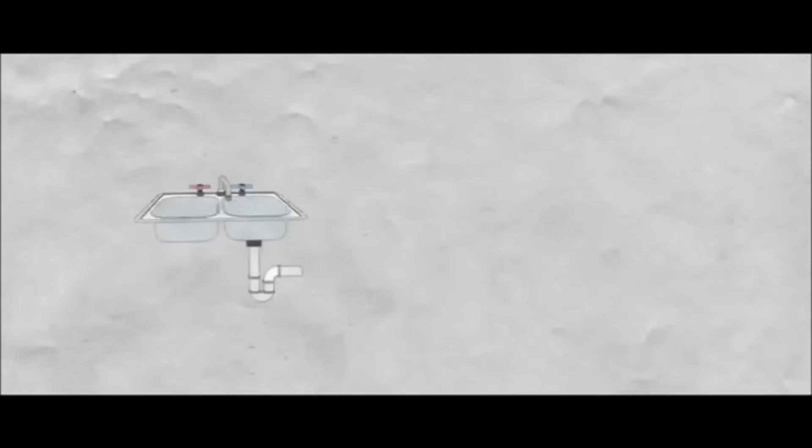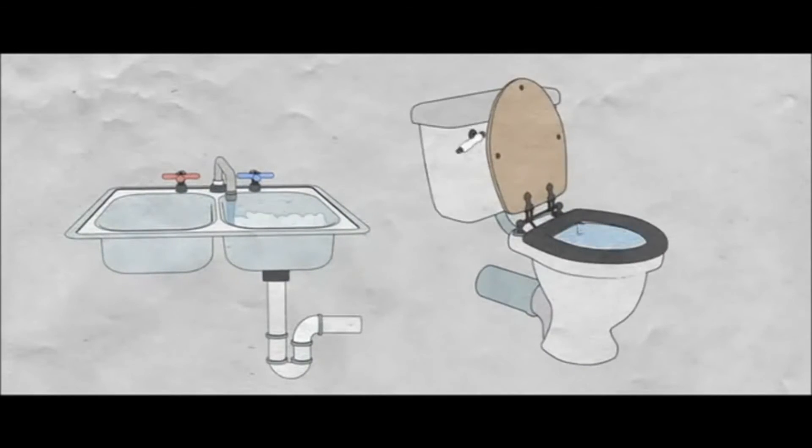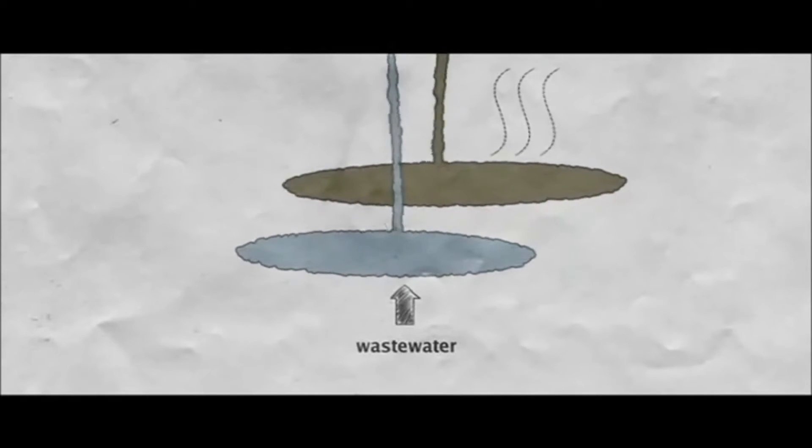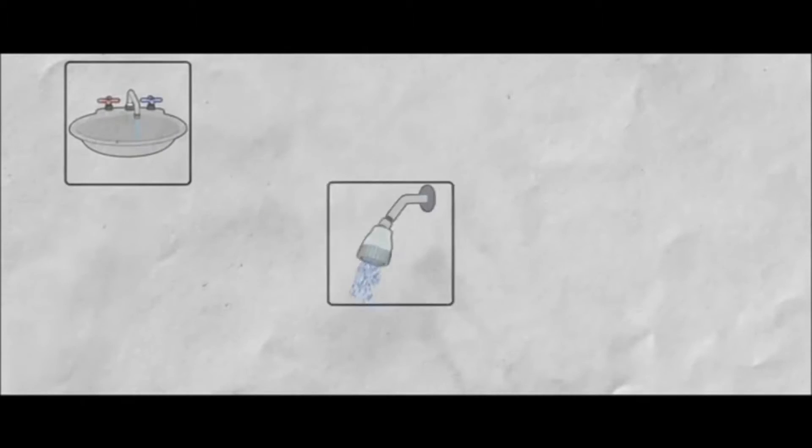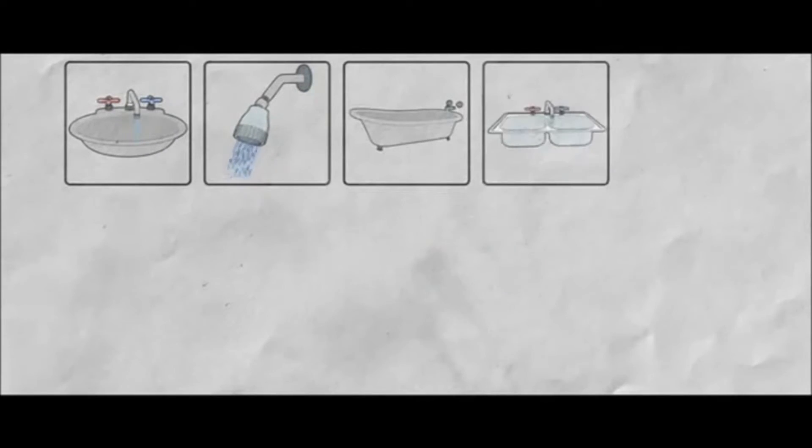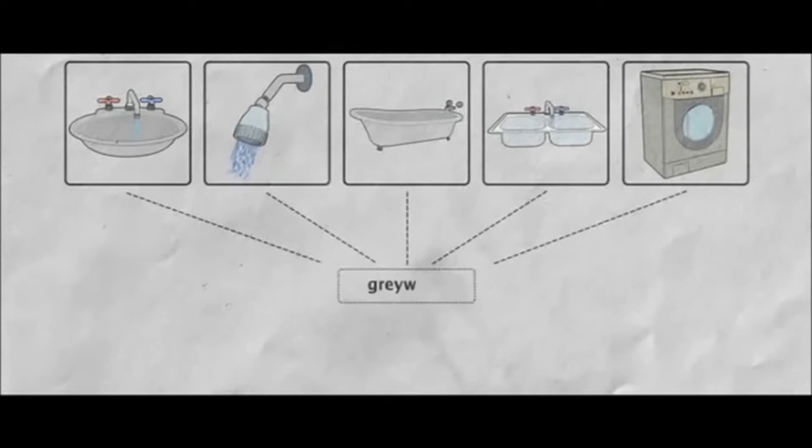Sewage. Every time we wash something or flush the toilet, we create waste water. Waste water from sinks, showers, baths, kitchens and washing machines is called grey water.